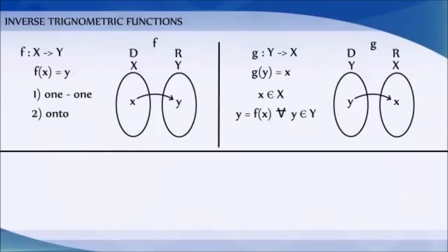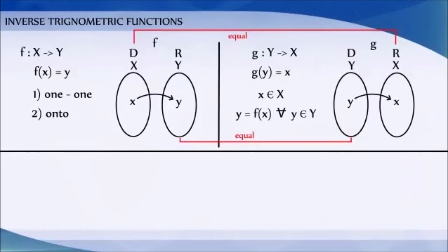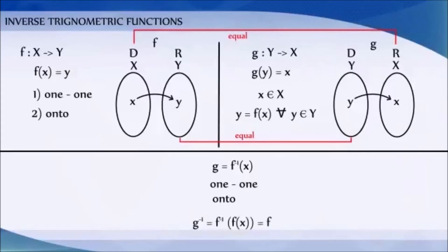You can observe that the domain of g is the same as the range of f, and the range of g equals the domain of f. The function g is called the inverse of f and is denoted by f⁻¹. Furthermore, g is also one-to-one and onto, and the inverse of g is f, meaning (g⁻¹) = f.